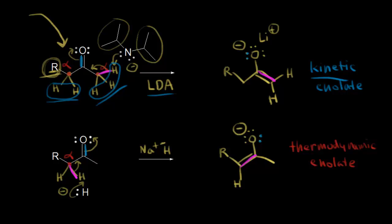Let's analyze these two enolates in terms of stability by looking at the substitution at the double bond. For the kinetic enolate, we have two hydrogens on one side of the double bond — it's not as substituted. For the thermodynamic enolate, we only have one hydrogen and we also have an R group, making it more substituted. Since a more substituted double bond is more stable, the thermodynamic enolate is the more stable enolate. The kinetic enolate is not as stable but forms the fastest. You can control which enolate you form depending on the base you use.